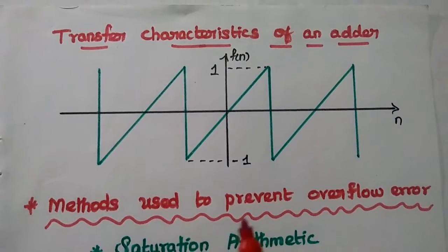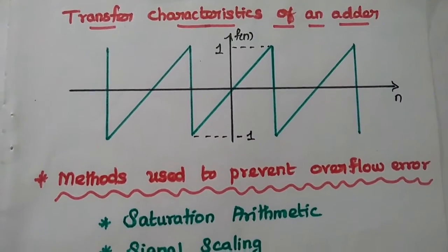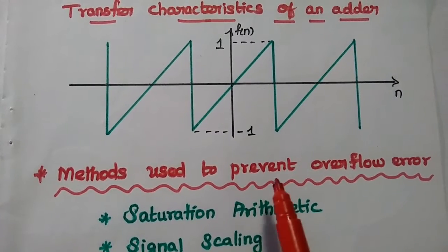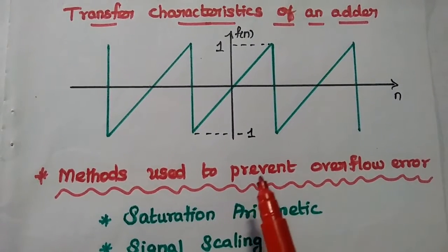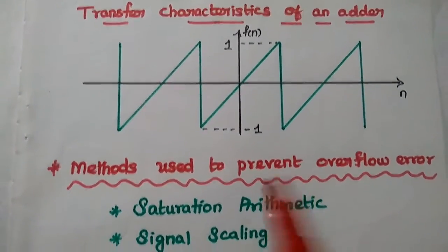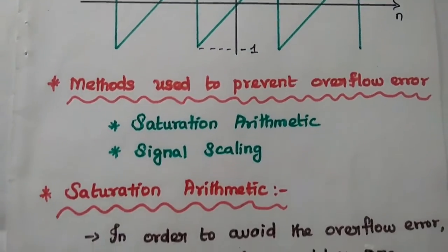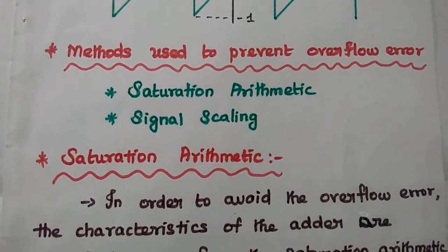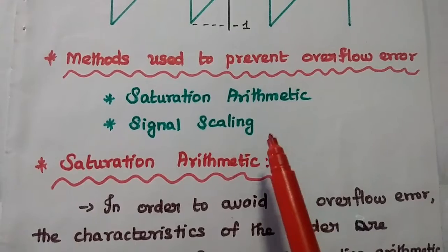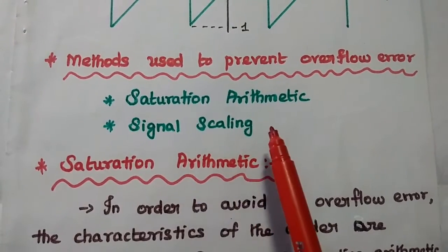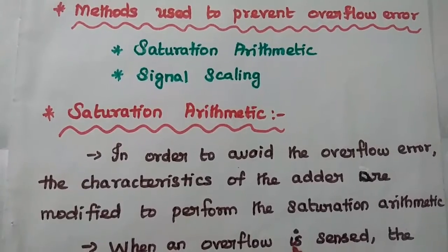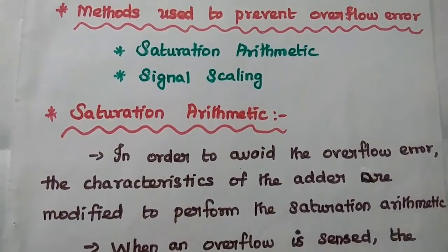This is the transfer characteristics of an adder. If any overflow error occurs, the filter oscillates between the maximum and minimum amplitudes. We need to prevent this overflow error in the adder circuit. For that, we are going to use two methods: one is the saturation arithmetic method, and the next is the signal scaling method. Let's discuss each one in detail.